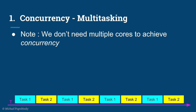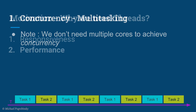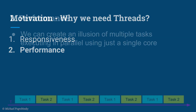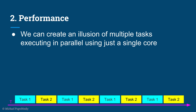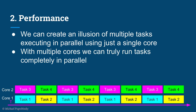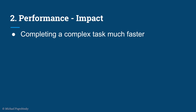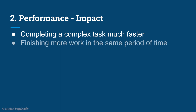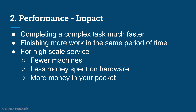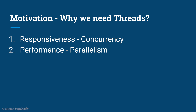We don't even need multiple cores to achieve concurrency — even with one core we can create responsive applications using multiple threads. The second reason we need multi-threading is performance. With multiple cores, we can truly run multiple tasks completely in parallel. This lets us complete a complex task in a fraction of the time, finish more work in the same period, and if running a high-scale service on multiple machines, we need fewer machines, which means less infrastructure expense.